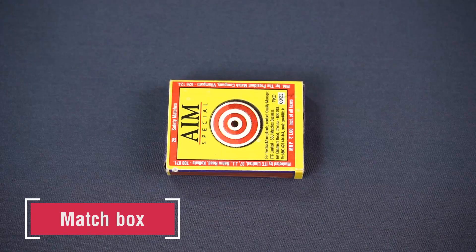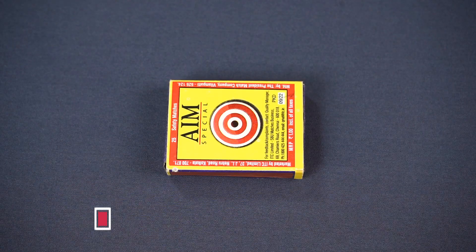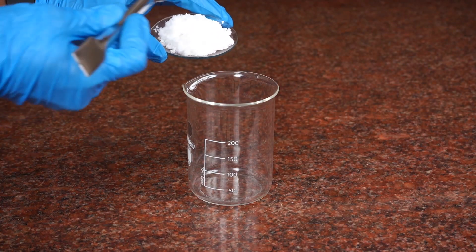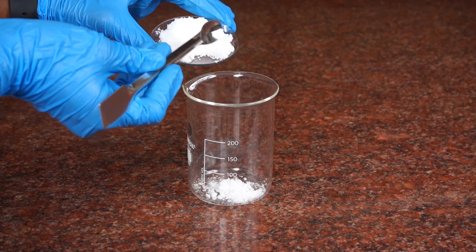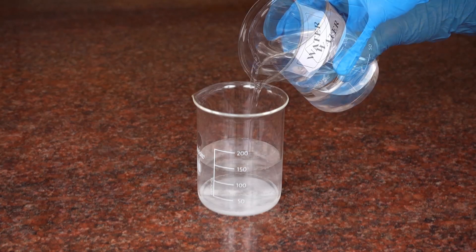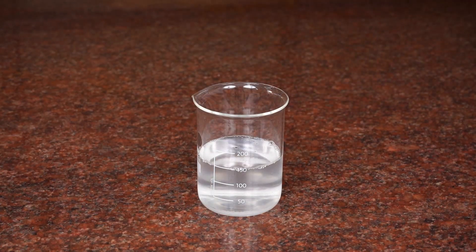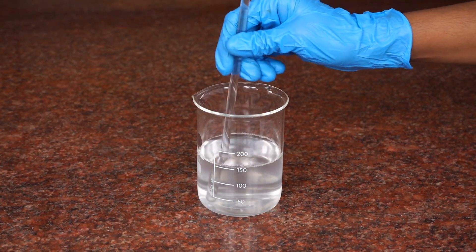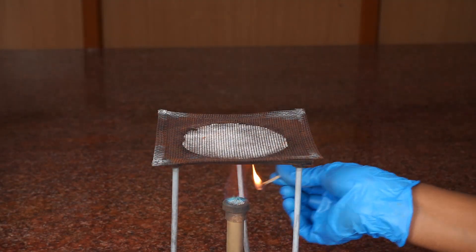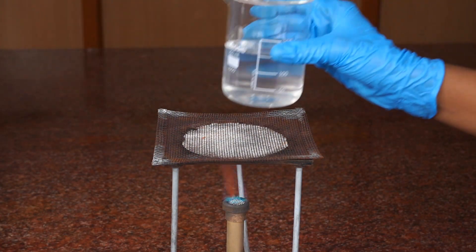Procedure: Take a small amount of common salt in a beaker. Add minimum amount of water to it. Stir the solution using a glass rod to dissolve. After dissolving the salt, keep the beaker on the tripod stand.